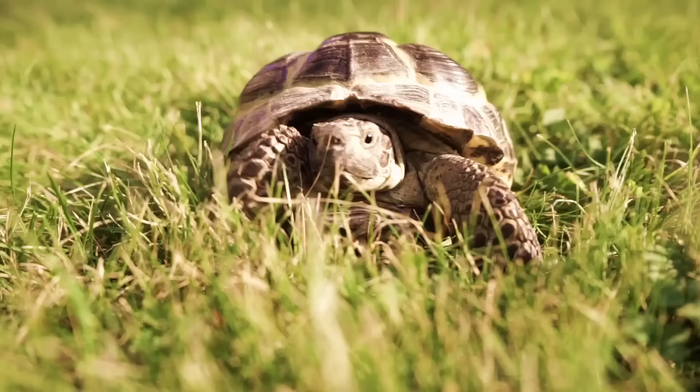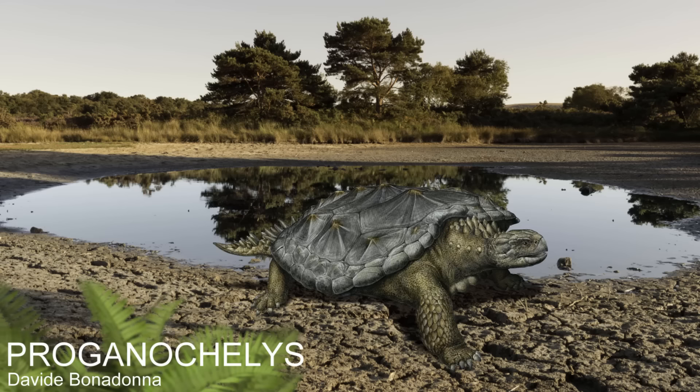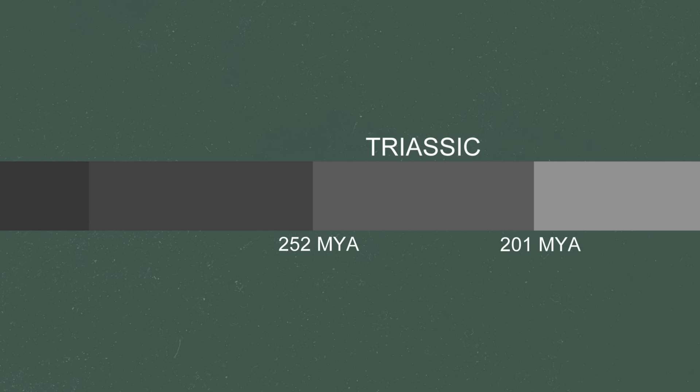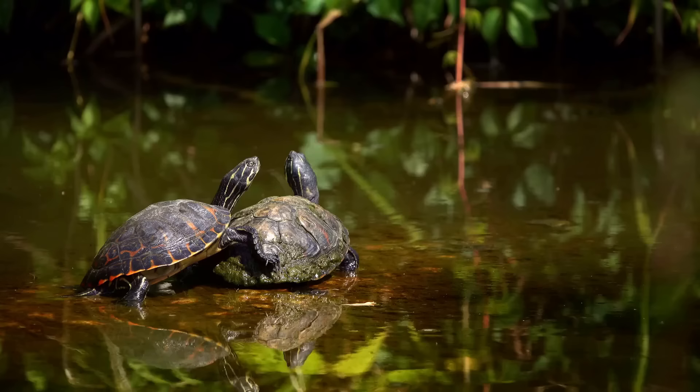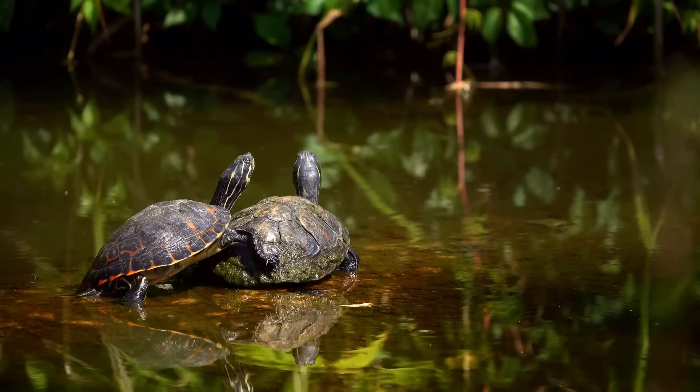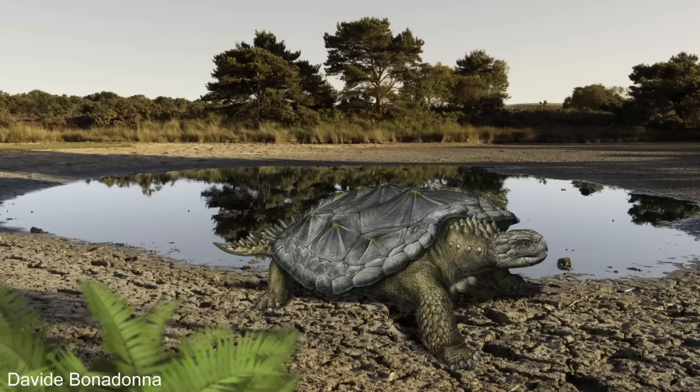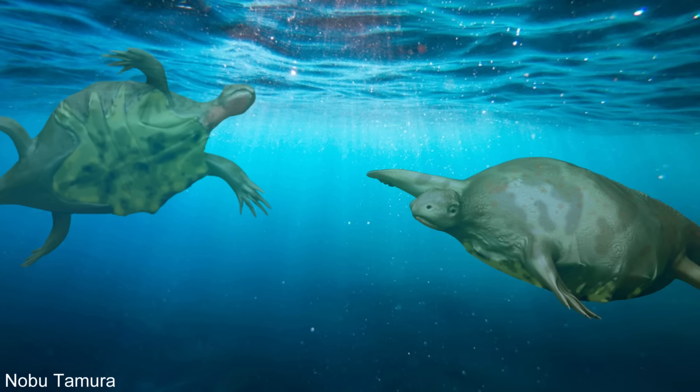Eorhynchochelys shows how confusing turtle evolution is, and to this day the question of where turtles come from is inconclusive. The earliest turtle recognizable as a turtle was called Proganochelys, which lived over 200 million years ago in the Triassic period. Discovered in the 1800s, it showed that turtles were ancient — as old as dinosaurs — but it just looked like a turtle and didn't offer any clues as to how their shell or other prominent features evolved.